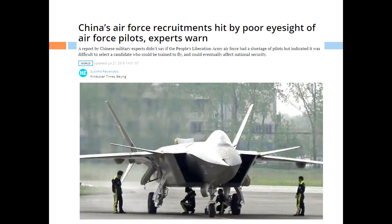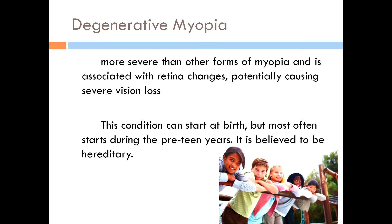There is a journal about China's air force recruitment being affected by poor eyesight. Experts warn that the myopic condition among Asian people is more prevalent than in other parts of the world. Degenerative myopia is more severe than other forms of myopia and is associated with retinal changes potentially causing severe vision loss — making it the most serious classification of myopia.